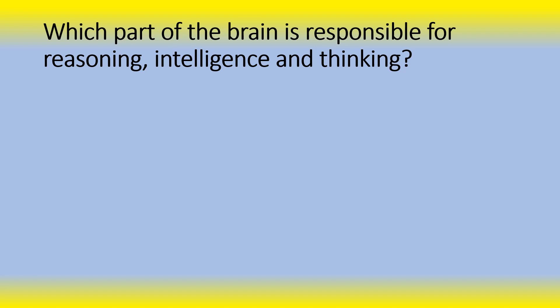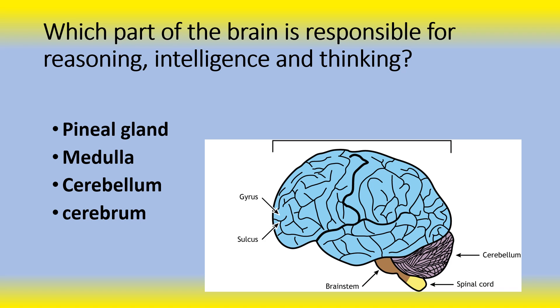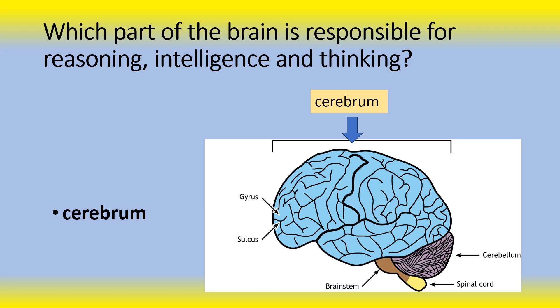Next question: Which part of the brain is responsible for reasoning, intelligence, and thinking? Is it the pineal gland? Is it the medulla? Is it the cerebellum? Or is it the cerebrum? The answer is the cerebrum. The cerebrum is the largest part of the brain, responsible for reasoning, intelligence, and thinking. It also initiates movement and regulates temperature. Other areas of the cerebrum enable problem solving, emotions, and learning.